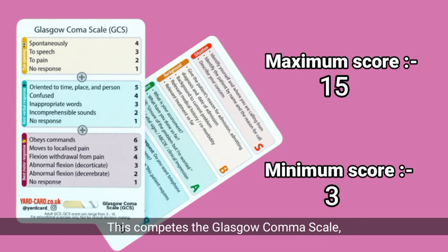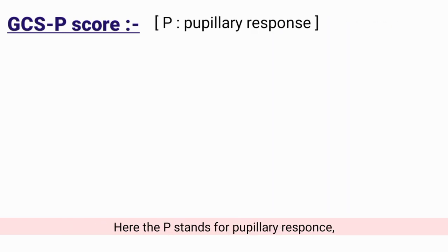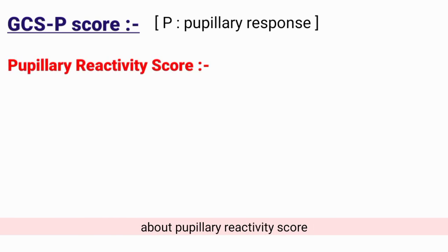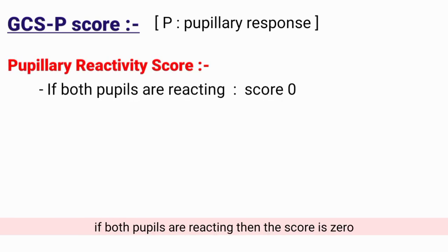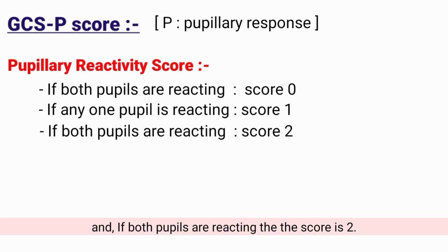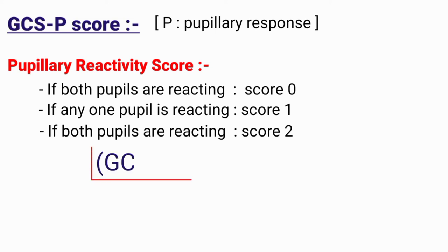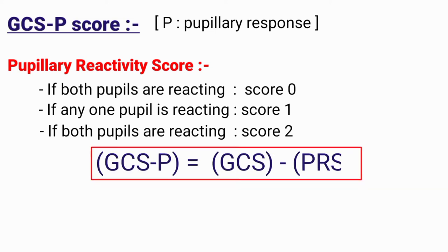This completes the Glasgow Coma Scale. Furthermore, we also have a GCS-P score and GCS-PA score, where P stands for pupillary response. For the pupillary reactivity score: if both pupils are reacting, the score is 0; if only one pupil is reacting, the score is 1; and if neither pupil is reacting, the score is 2. The GCS-P score is calculated by subtracting the pupillary reactivity score from the Glasgow Coma Scale, i.e., GCS-P = GCS minus pupillary reactivity score.